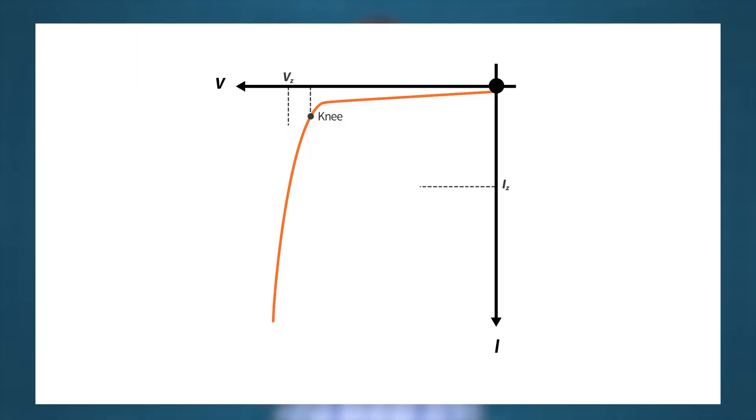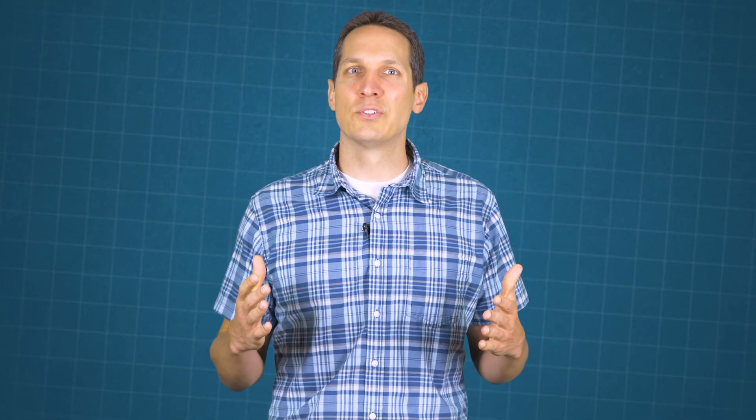Zener breakdown voltage is usually specified at a value of the Zener current known as the test current. Check out the written tutorial on circuitbread.com to learn even more about Zener diodes and the important specifications that affect their operation. When we do the practical tutorial on Zener diodes, we'll need to understand these specifications to get the performance we want.